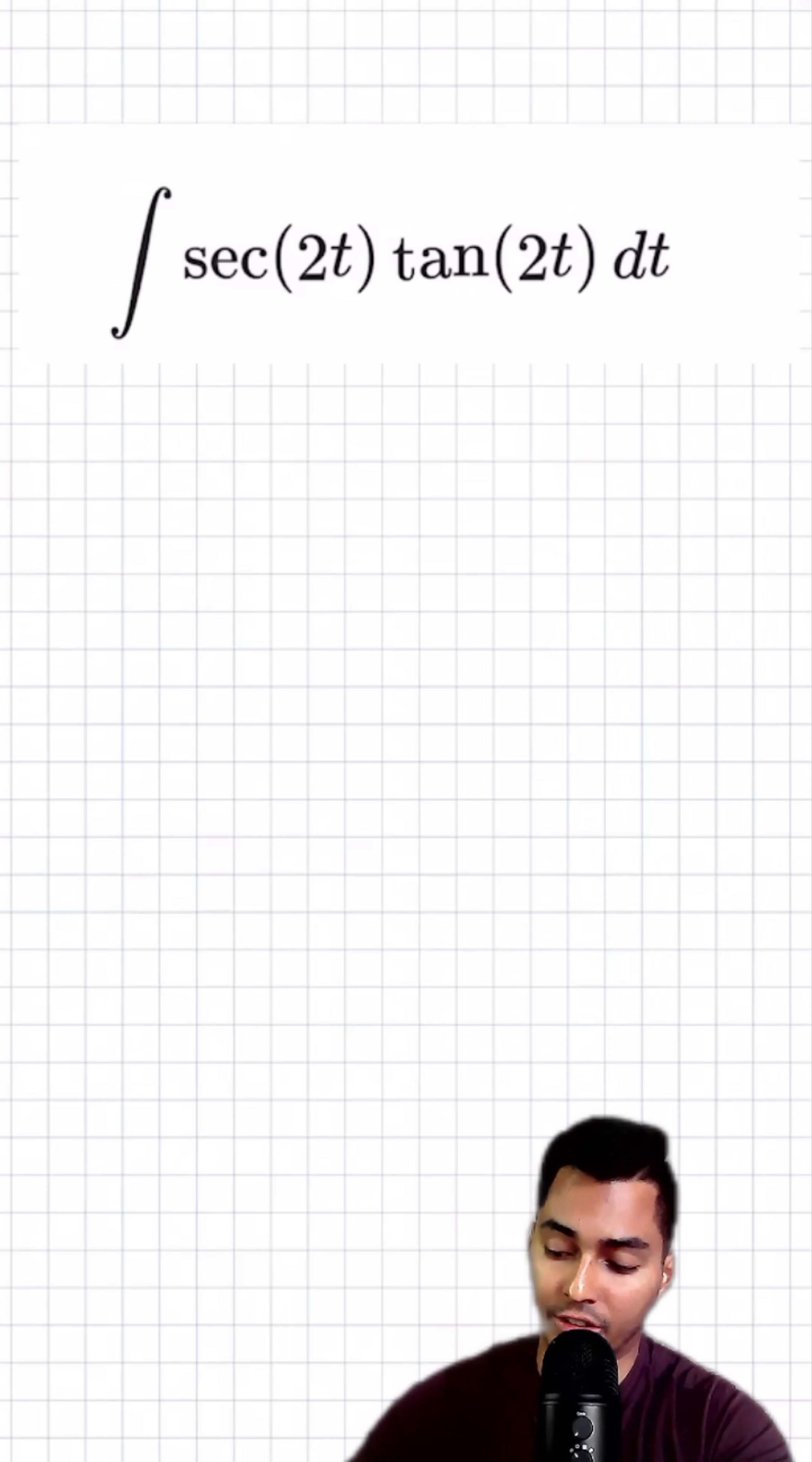Can you solve this integral? Today we're going to integrate the secant of 2t times the tan of 2t dt.